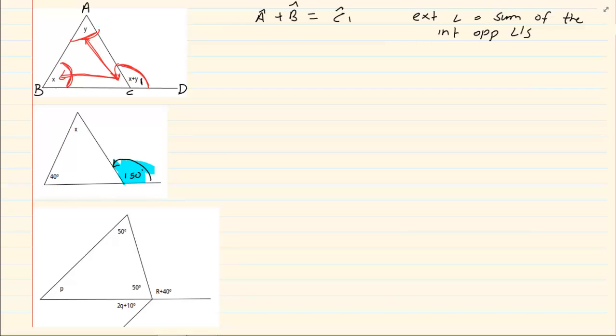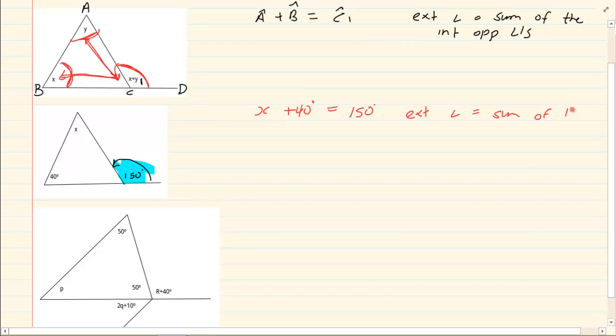Now what do I know? I know that x plus 40 is going to equal to 150 degrees. Why? Exterior angle is equal to the sum of the two interior opposite.